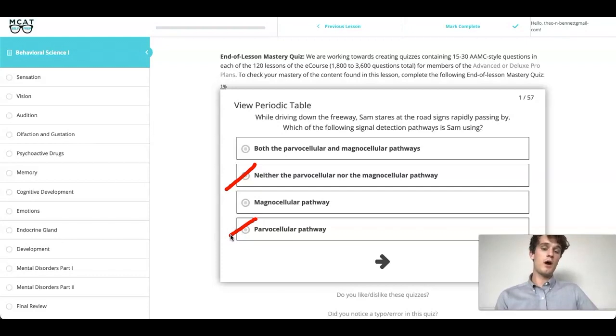Now I just need to see, is the parvocellular pathway involved? I can see in the question stem that there are no indications that color is involved. And because I know the AMC is not trying to trick me, I'm just going to go ahead and pick answer choice C.